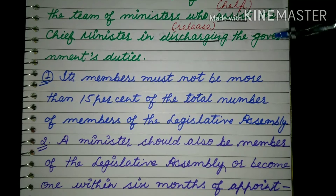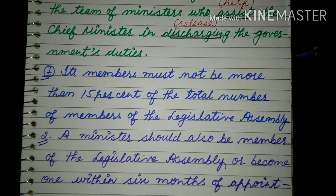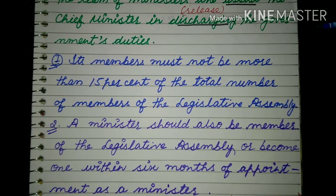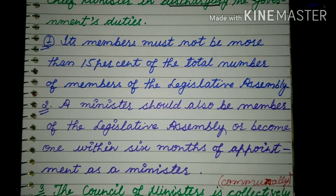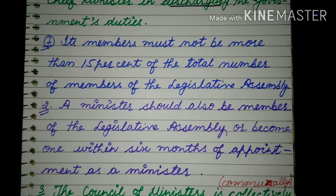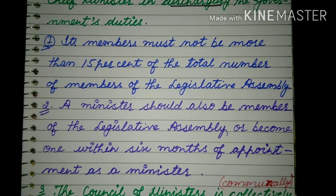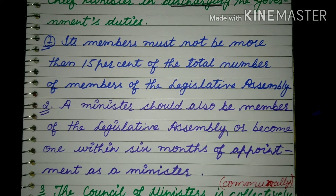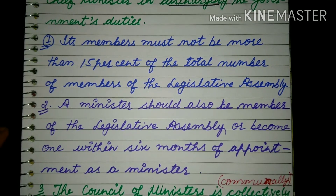Its members must not be more than 15% of the total number of members of the legislative assembly — इसकी जो संख्या होती है वो 15% से ज्यादा नहीं होनी चाहिए legislative assembly के members से। Second, a minister should also be a member of the legislative assembly, or become one within six months of appointment as a minister — within six months के अंदर जो ministers होते हैं उनको appoint करता है council of ministers के लिए।